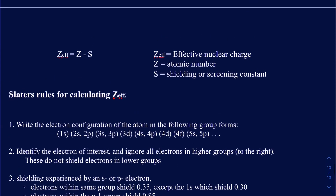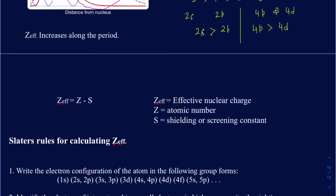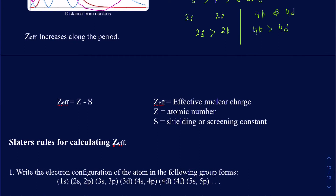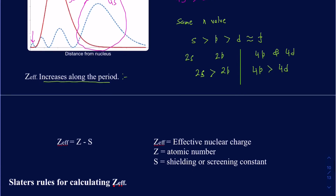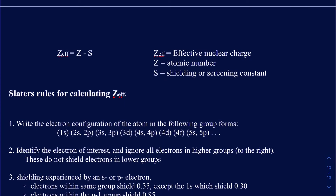Now, before we calculate Z-effective, let's talk about the quantitative behavior of Z-effective. Going from left to right across a period, Z-effective increases because electrons in the same shell shield other same-shell electrons less effectively — core electrons shield valence electrons more than valence electrons shield each other. The formula is: Z-effective equals the nuclear charge Z minus S, where S is the shielding or screening constant.